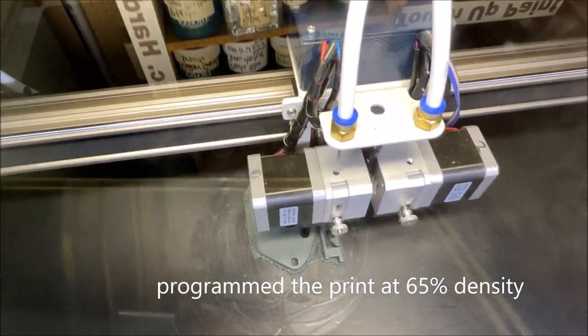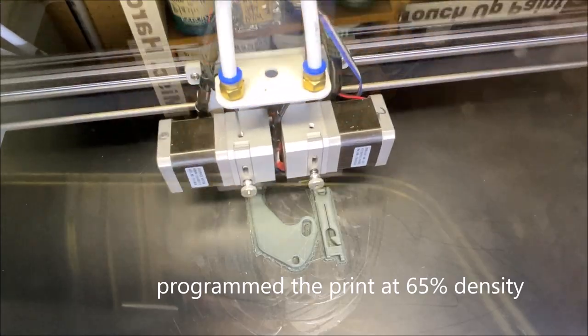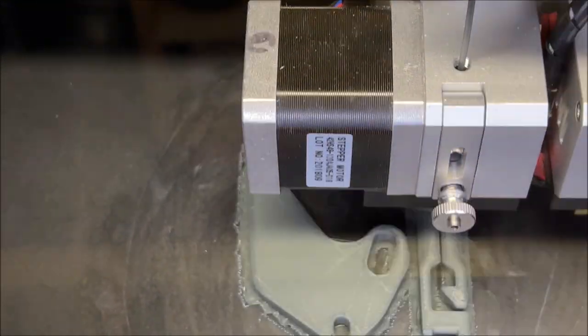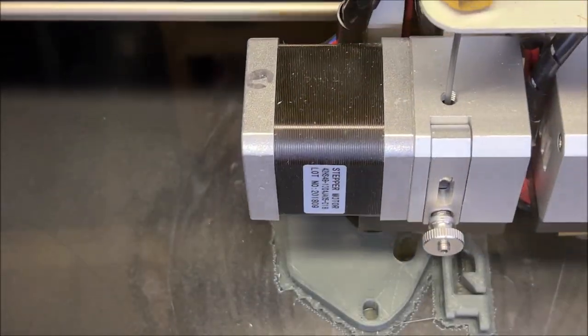This particular part that I'm printing took about an hour and 10 minutes and I set it up that the density of the print was about 65%. That affects the time.